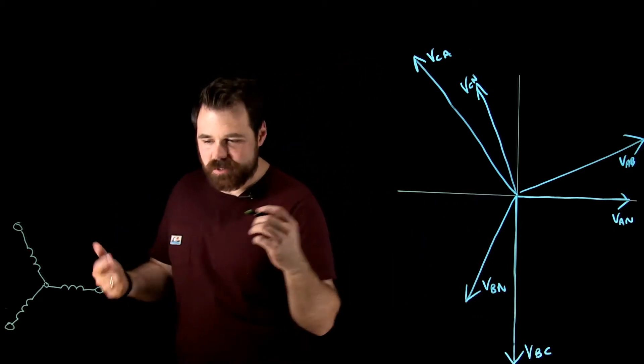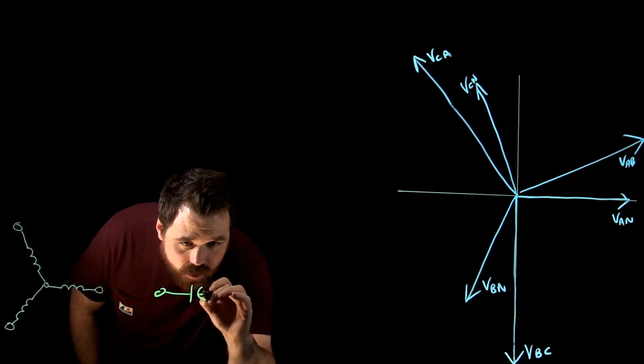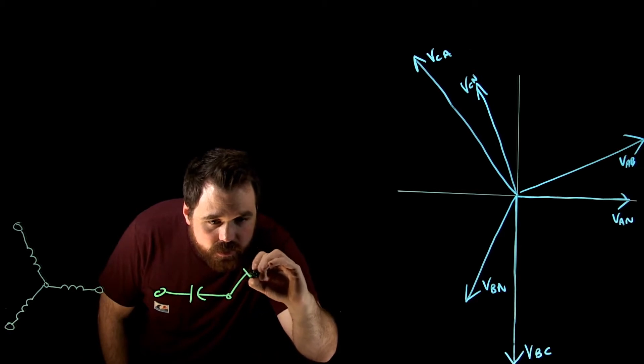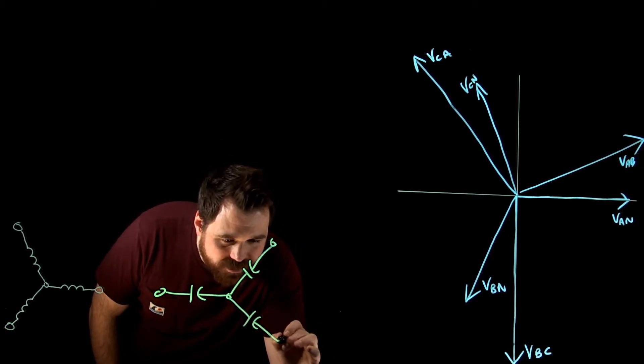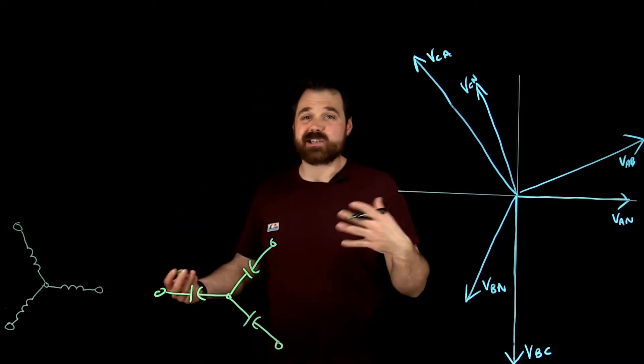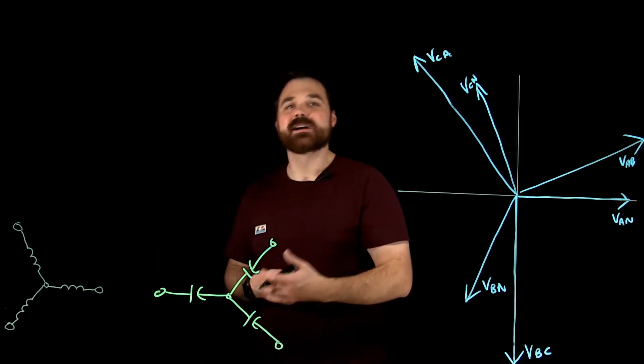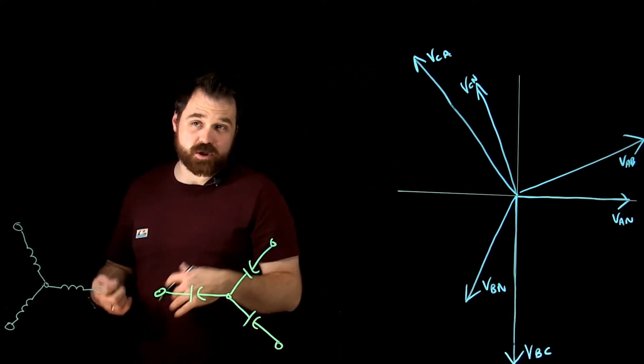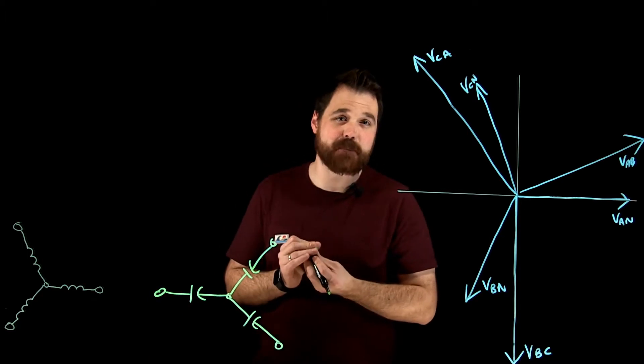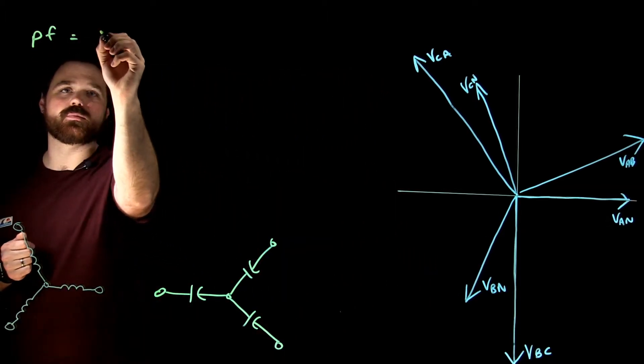So the load in particular I want to talk about right now is a three-phase capacitive load. I'm going to say that each one of these capacitors has the same XC value, or the same capacitance, which gives me the same current through each one. And of course, because they're capacitors, they all have the same power factor. With capacitors, our power factor is going to equal zero.